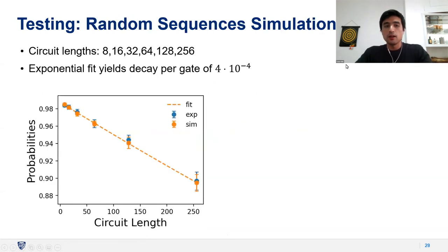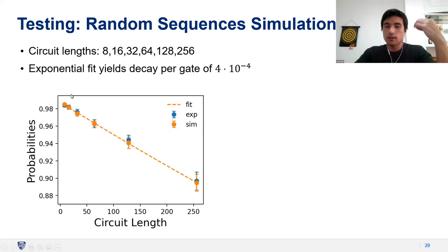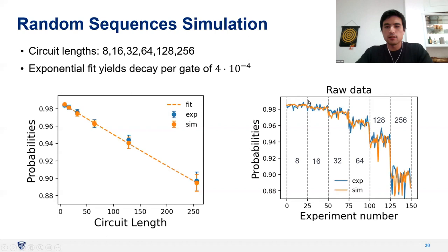We run these circuits on both the quantum experience and the simulator. Very happily and surprisingly, we find an error rate of about 4×10⁻⁴ from the RB experiment, consistent with the error rates from interleaved randomized benchmarking reported by IBM. The simulator using our characterized noise parameters matches the experimental results very well, which we consider a successful testing of the noise model.